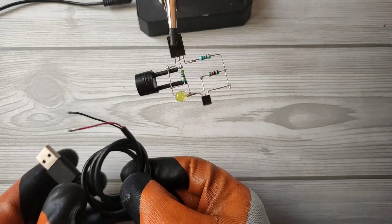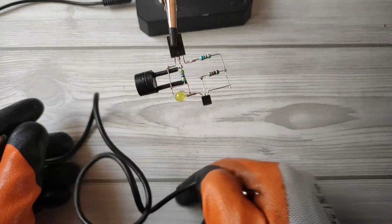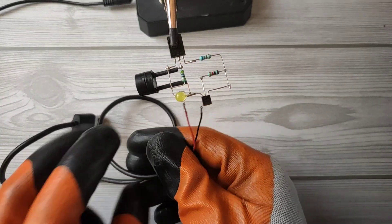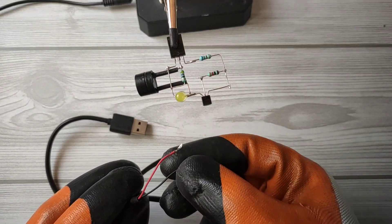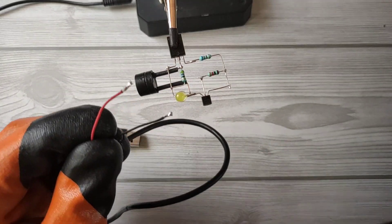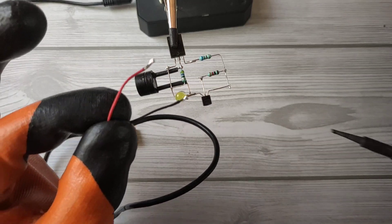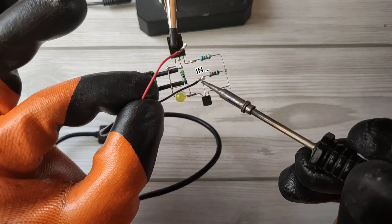Now let's take a USB cable. Solder input negative on pin 2 of the shunt regulator.